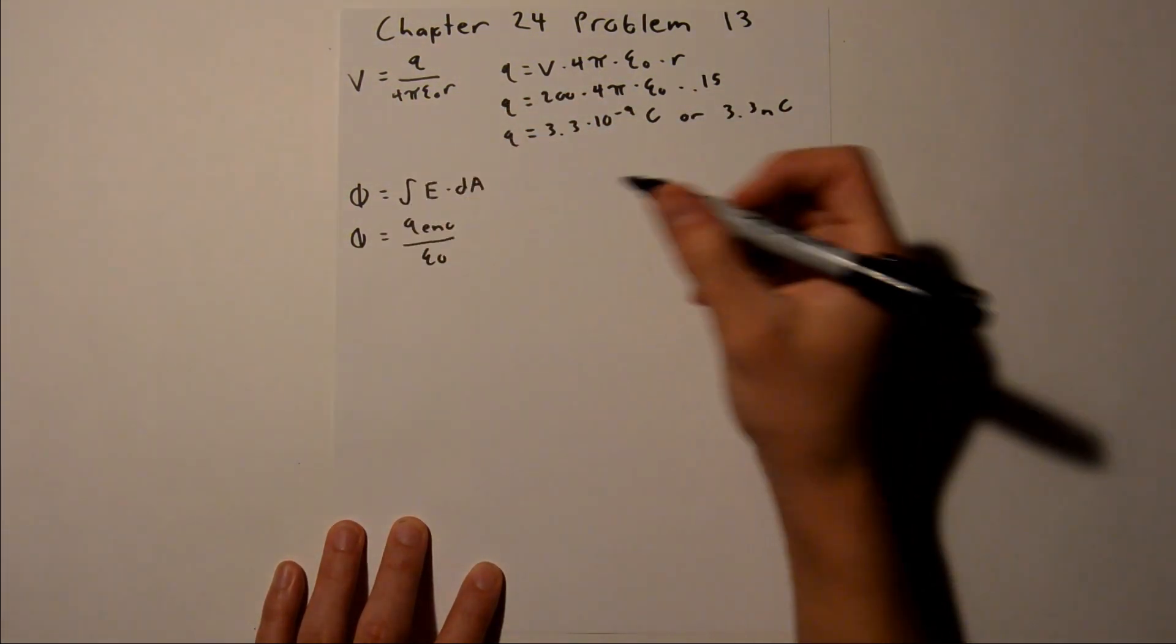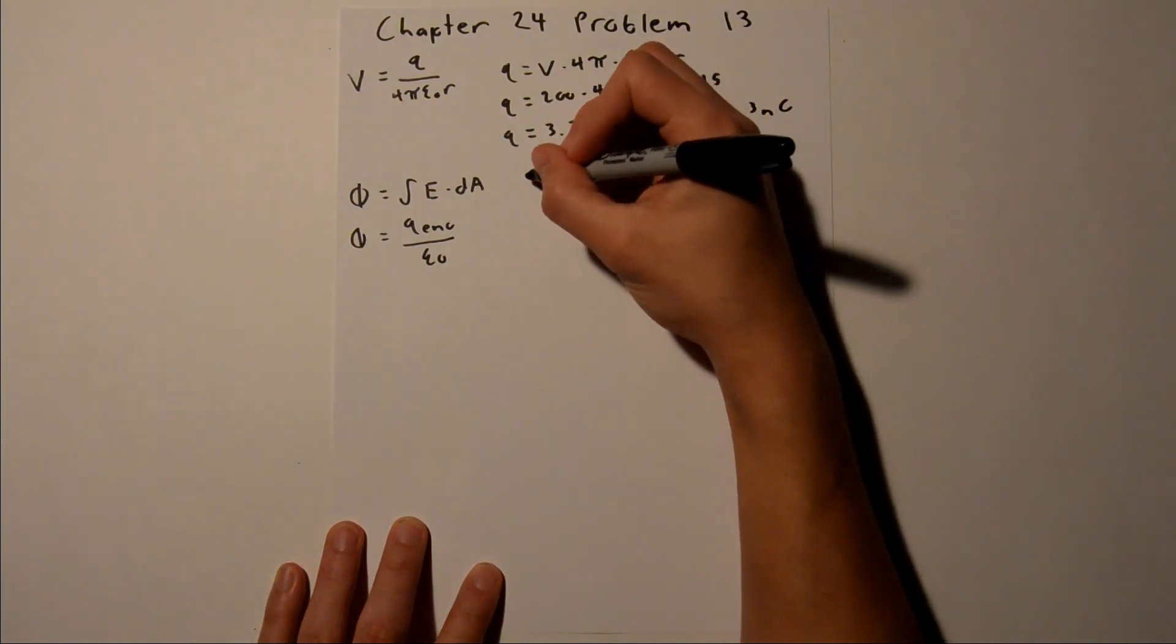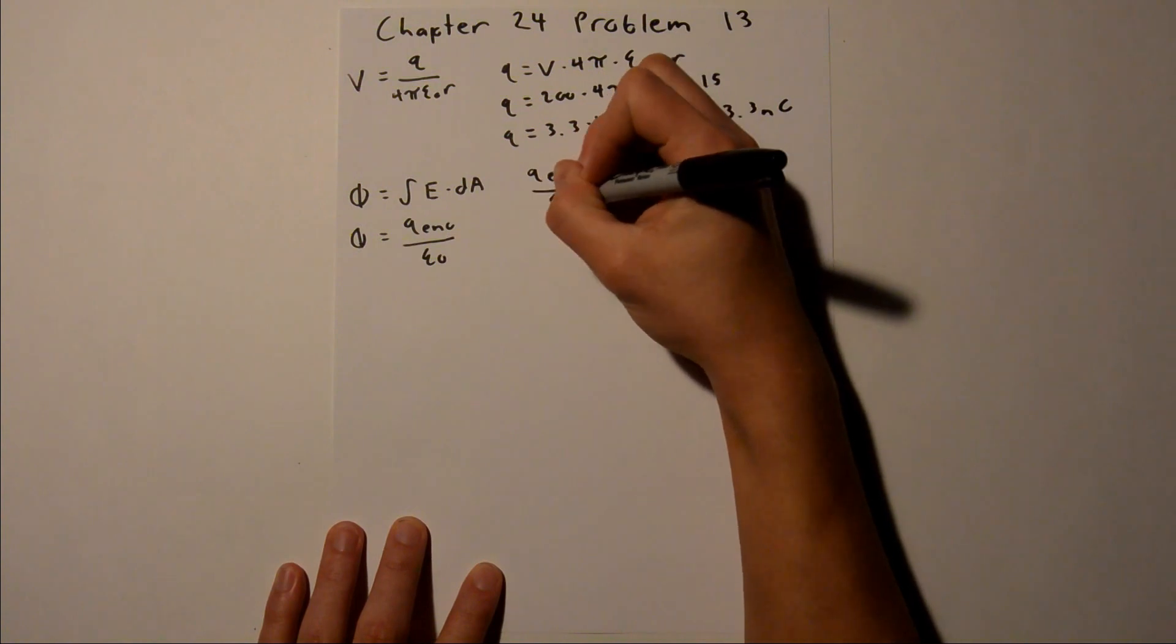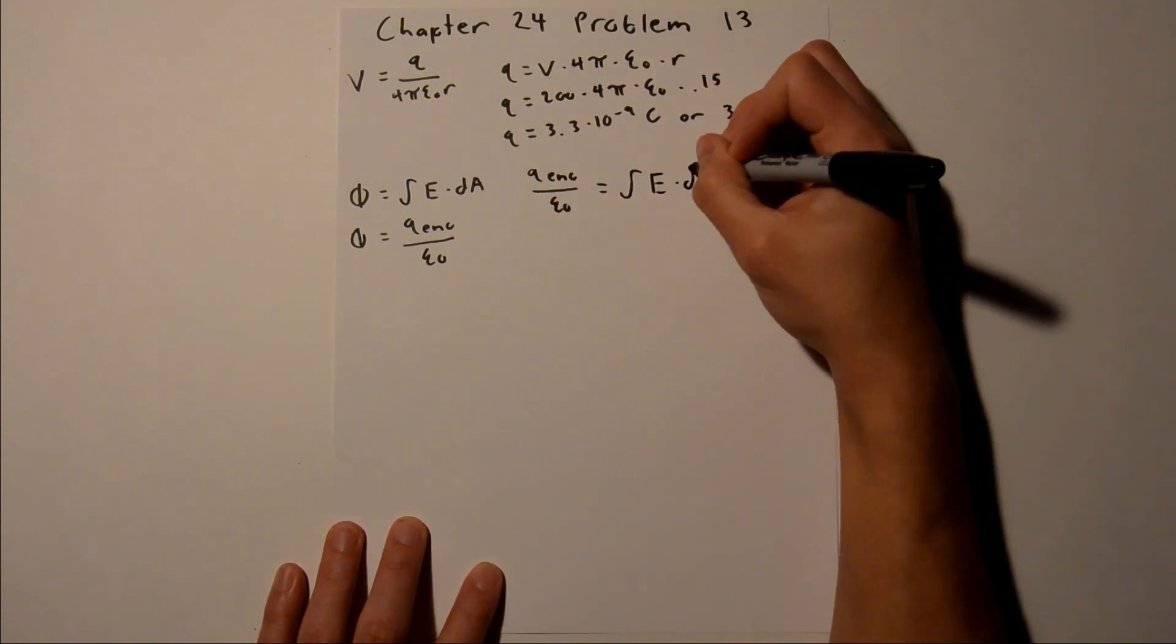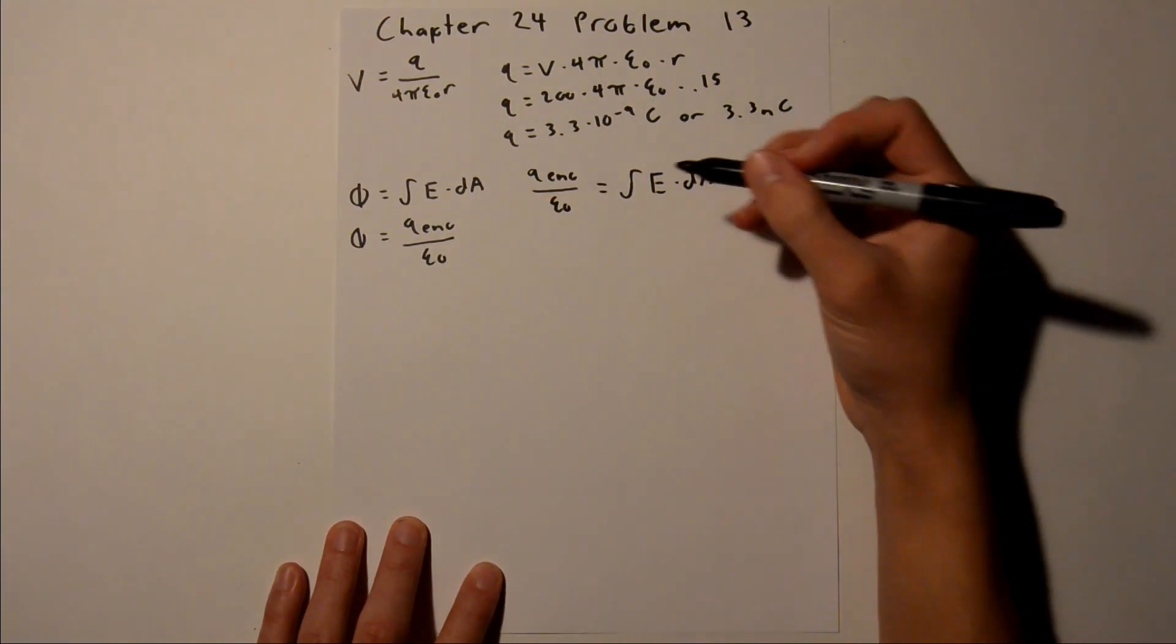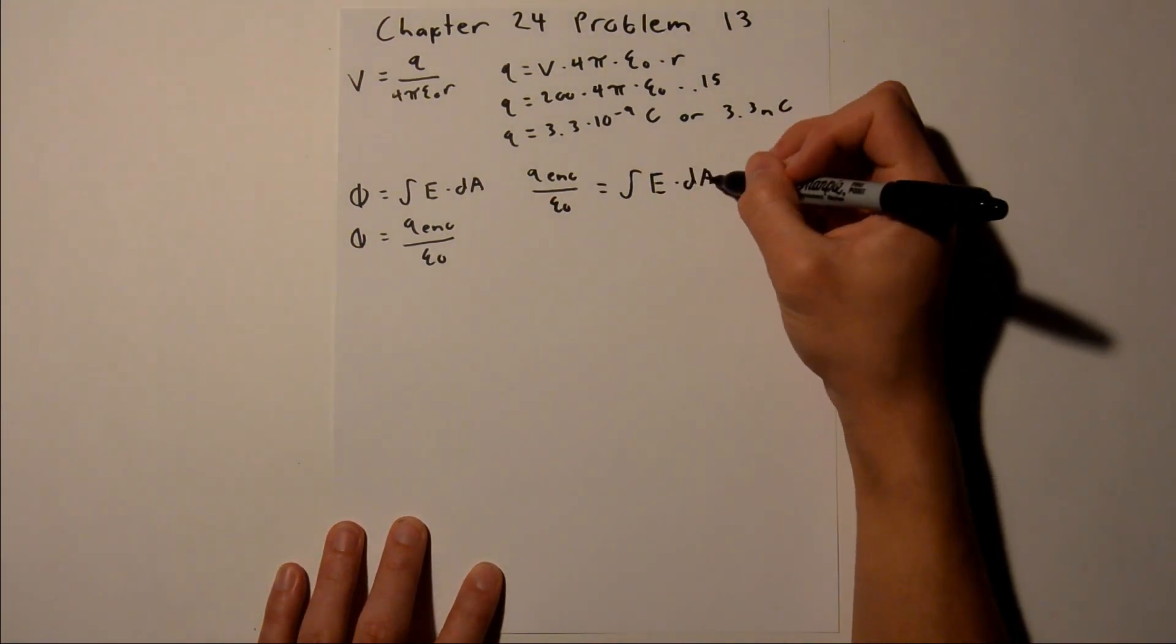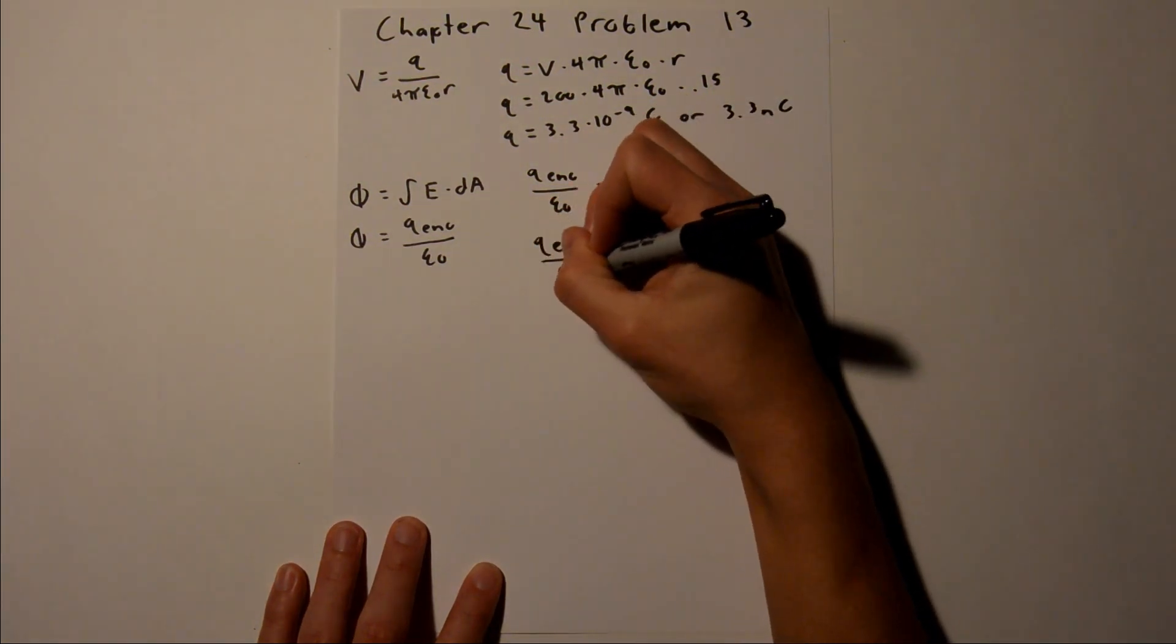So we can set those two equal to each other, and we will get q enclosed over epsilon sub 0 is equal to the integral of e dot dA. And the integral of e dot dA with respect to A is just eA, so we can simplify this.